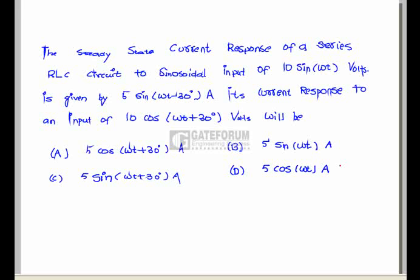The steady-state current response of a series RLC circuit to a sinusoidal input of 10sin(ωt) is given by 5sin(ωt - 30°). From this data, we can obtain the impedance of the RLC network: Z = V/I = 10∠0° / 5∠-30° = 2∠30°.